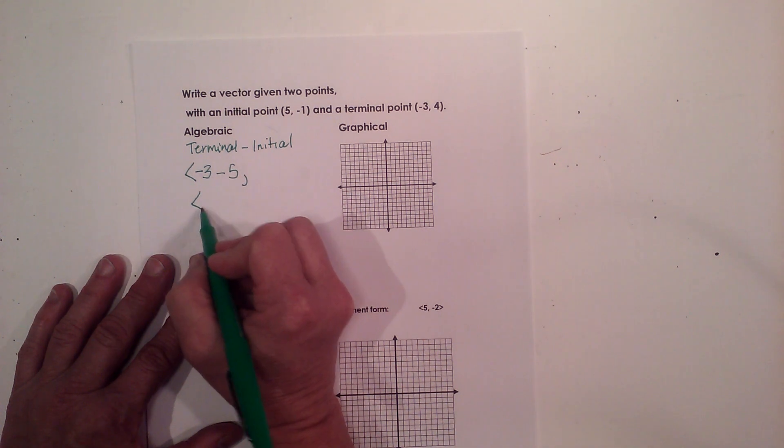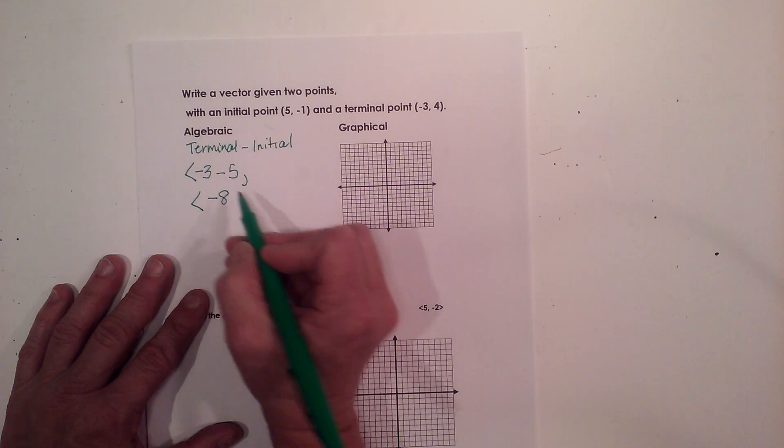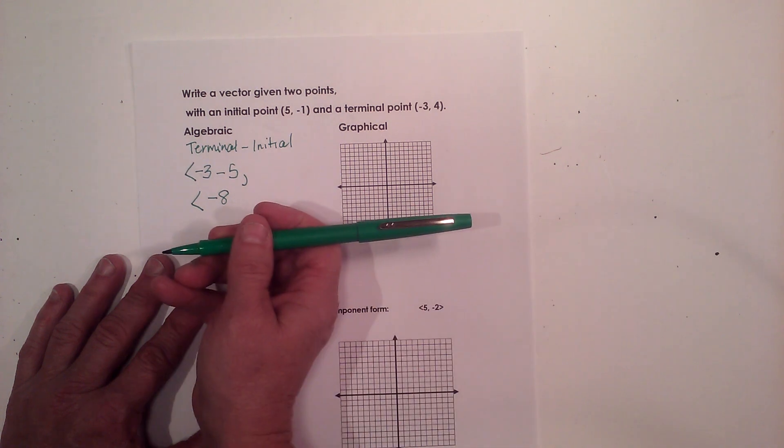So algebraically, I'm going -3 minus 5 is -8. So I'm going 8 in the left direction.